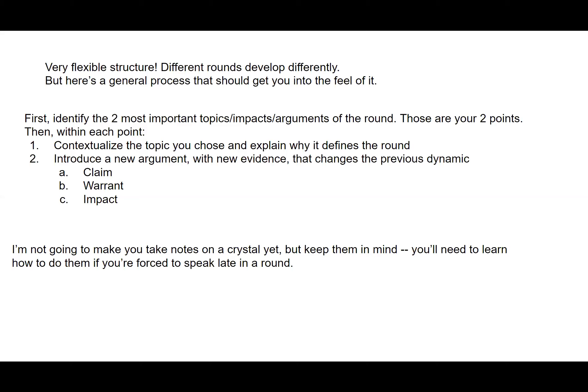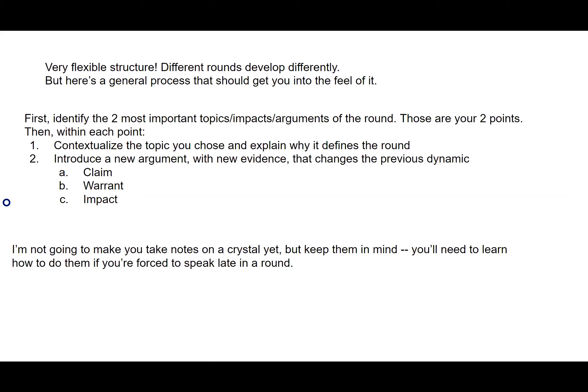Inside each of your points, you first need to contextualize why you chose this particular topic — bring up all of the speakers that have mentioned it so far, offer a brief summary of what they said, and talk about how crucial it is to the arguments of their side. Then after preempting the impact on the round, you introduce a new argument that changes the dynamic, following the claim-warrant-impact structure. This is a bit complex, so I'm not going to make you take notes on crystals yet — just keep them in mind and you can learn about them later in the year. And really, that's most of what I have to say. Thanks, everyone.